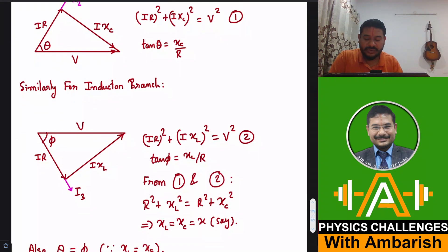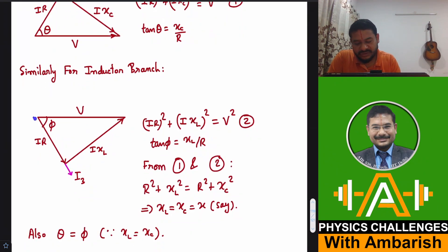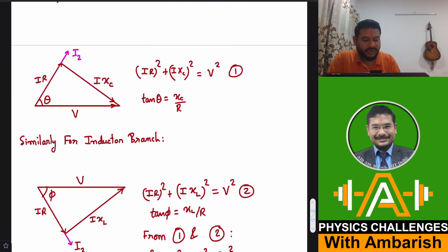Similarly, for inductor branch, you know that current will lag behind the voltage phasor. So this is again the voltage phasor. Let us say current is lagging behind a phase of phi. So again, in resistor, the voltage is in the same phase as the current I3 and the voltage in the inductor leads the current phasor by a phase of pi by 2. So anticlockwise, pi by 2 have taken this angle and this is I XL and the phasor sum should again be equal to the applied voltage. So what does this give me? Pythagoras theorem IR square plus I XL square is equal to V square and tan phi is XL upon R. So this is your equation two and this is equation one.